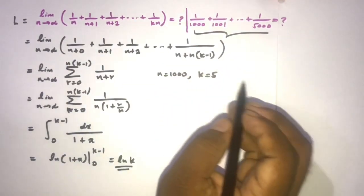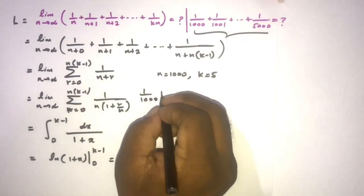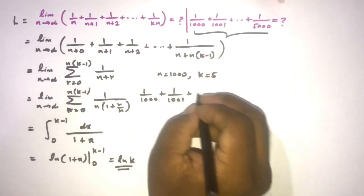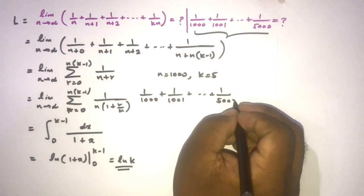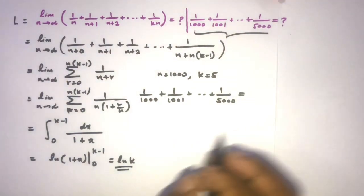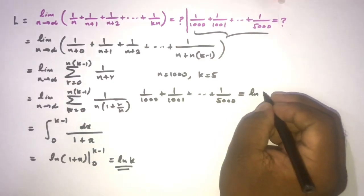So we have 1 over 1000 plus 1001, plus this is going to plus 1 over 5000, and this is equal to, we know natural log of k, so here natural log of 5.